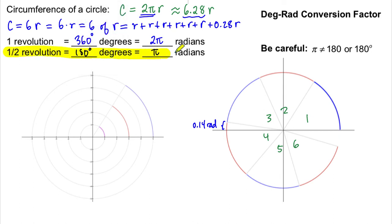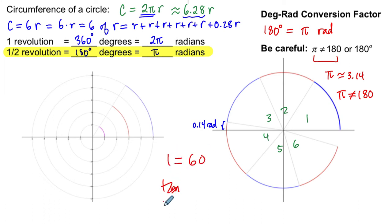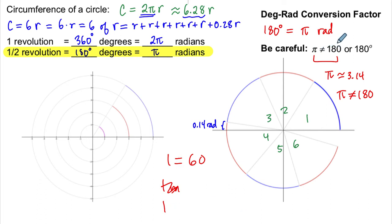We rewrite it: 180 degrees equals π radians. Now we need to be very careful — we're not saying π equals 180. Pi is still approximately 3.14; it does not equal 180. That's not true, just as it's not true that 1 equals 60. We know that 1 minute equals 60 seconds, but without units, 1 does not equal 60. In the same way, π does not equal 180.